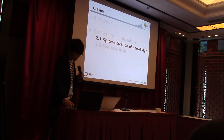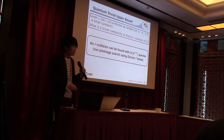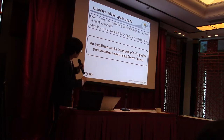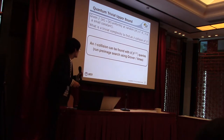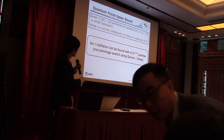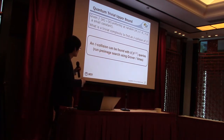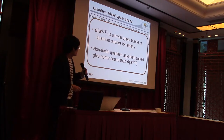I now move to the systematization of knowledge. There is a known upper bound to find multiple collisions. Given a function f where n ≥ L·m and L is a small constant, the quantum complexity to find an L-collision is order n to the power 1/2 queries. This can be done by running Grover search L times. So order n to the power 1/2 is a trivial upper bound of quantum queries for small L, and no quantum algorithm should be better than this trivially.